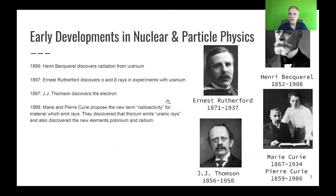Progress was then made in the understanding of physics. Henri Becquerel discovered radiation from uranium, and Ernest Rutherford, by studying this radiation, found there must be at least two different sources, which he called — simply following the Greek alphabet — alpha and beta. In the same year, J.J. Thomson discovered the electron, a charged particle.